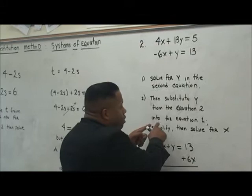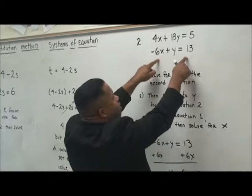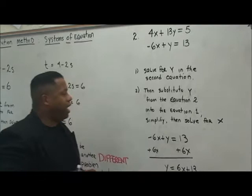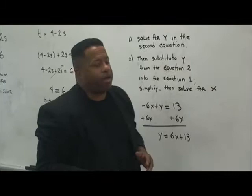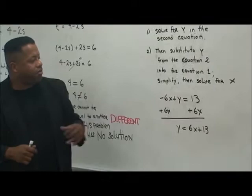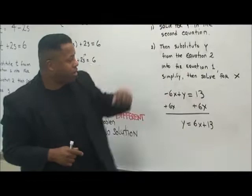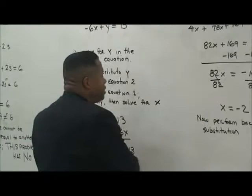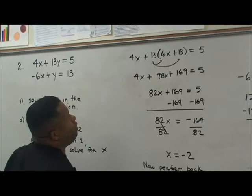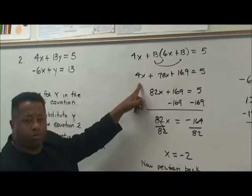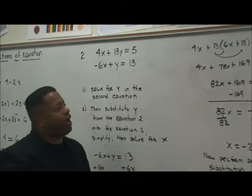We substitute as soon as we solve for y, then plug it into the first equation and solve for x. We have negative 6x plus y is equal to 13, so y is equal to 6x plus 13. We take this and plug it into the first equation: 4x plus 13 times (6x plus 13) is equal to 5. That gives us 4x plus 78x plus 169 is equal to 5. Grouping like terms: 82x plus 169 is equal to 5.